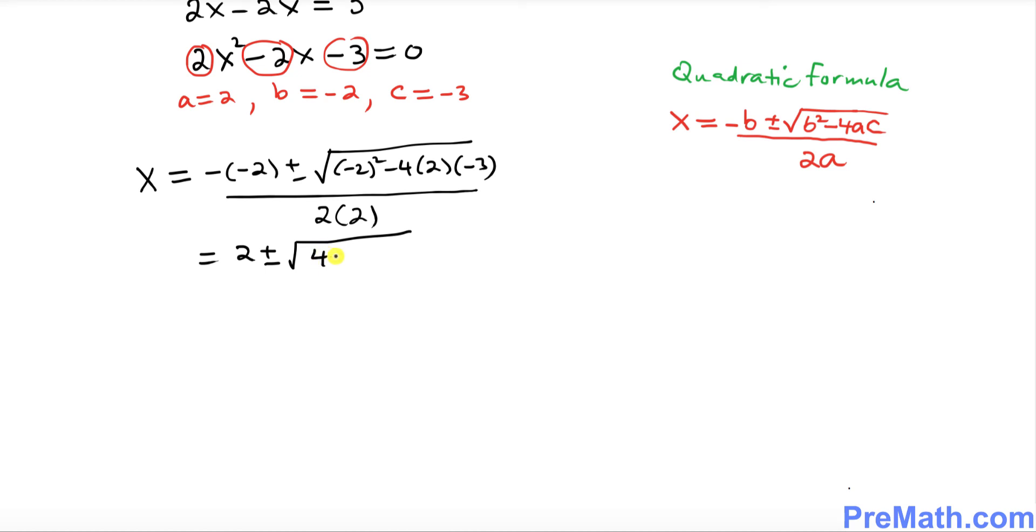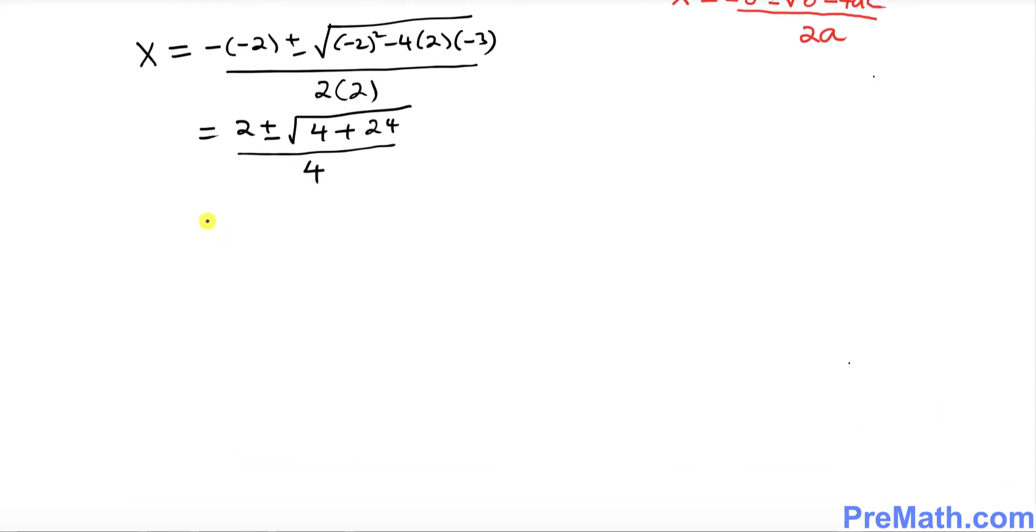Negative and negative become positive, so 2 ± √(4 + 24) / 4. This simplifies to 2 ± √28 / 4.